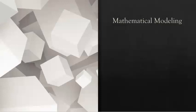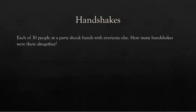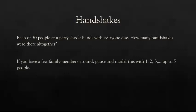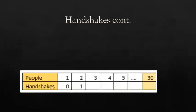So we're going to start with an investigation. This is best acted out first, and then we'll create a mathematical model. So if you have the ability, I would like you to gather a small group of friends or family to model this problem in real life. After I read the problem, you can pause the video and gather your people and model this in person. Each of 30 people at a party shook hands with everyone else. How many handshakes were there all together? So again, if you have a few family members around, pause and model this with one, two, three, maybe up to five people. You can use this chart to help you keep track of everything.